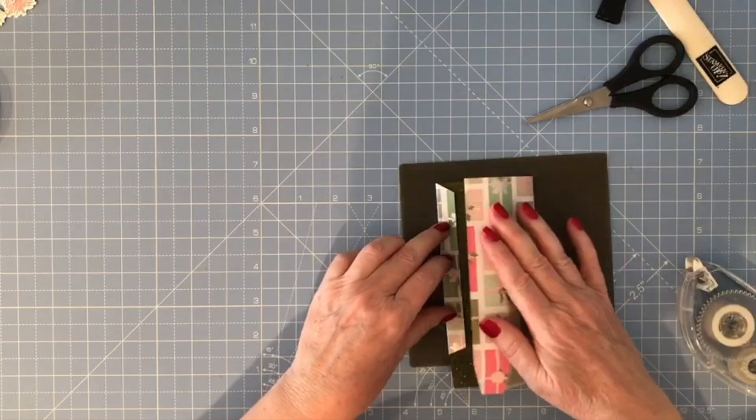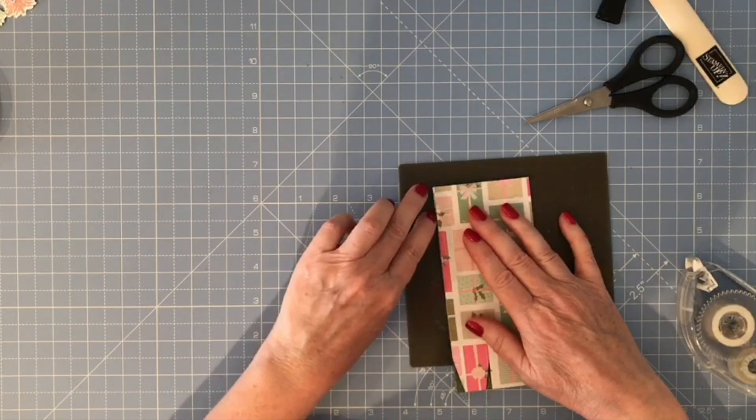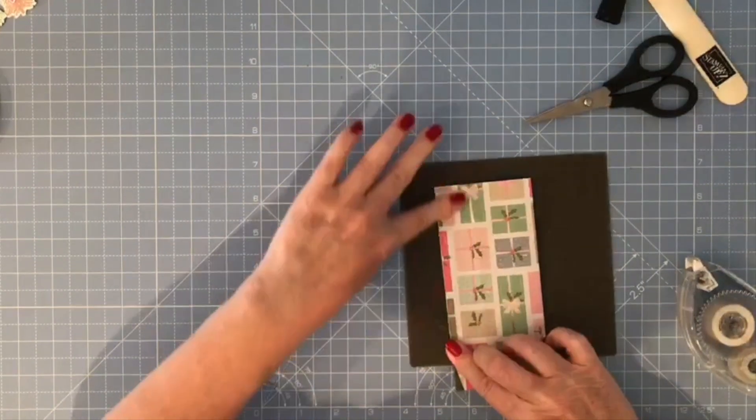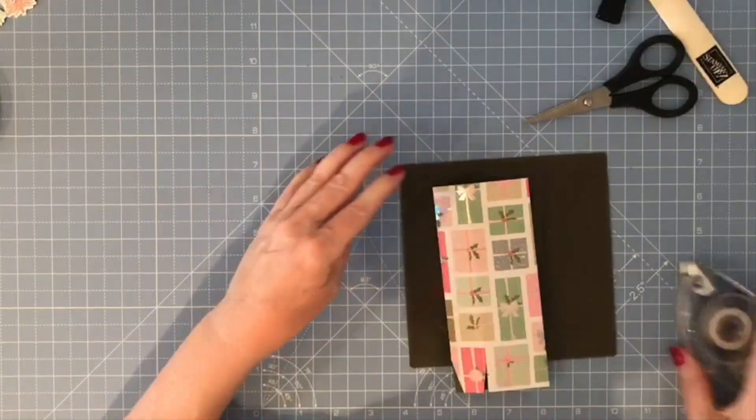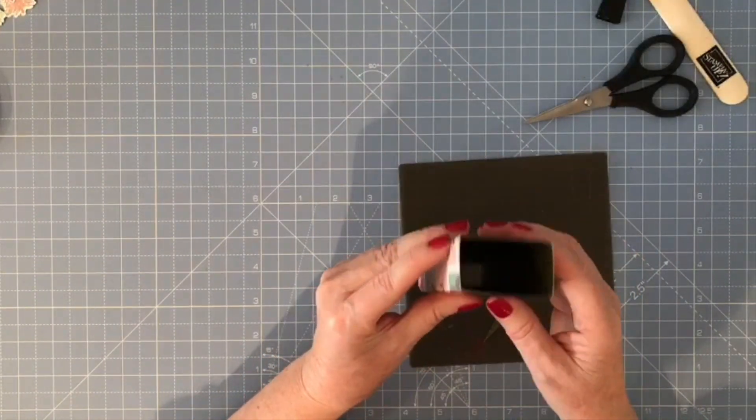I'm going to fold this over and this should all line up together nicely. So that's the back of the box where the seam is.